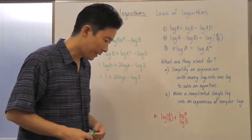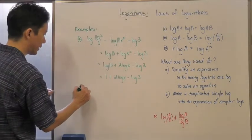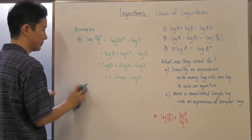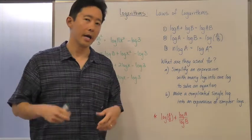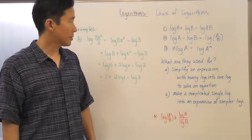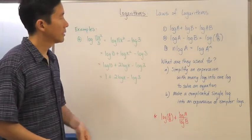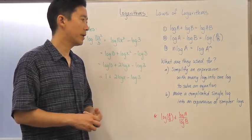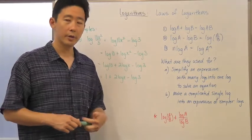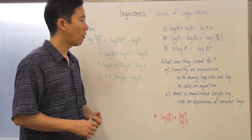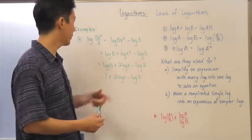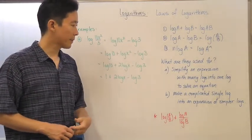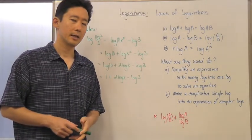To wrap things up, these are the three laws of logarithms. They're used either to simplify an expression with many logarithms into one logarithm to solve an equation — which we'll look at in class — or to take a complicated single logarithm and break it up into an expression of simpler logs, as we did here. Good luck and we'll talk about it in class.